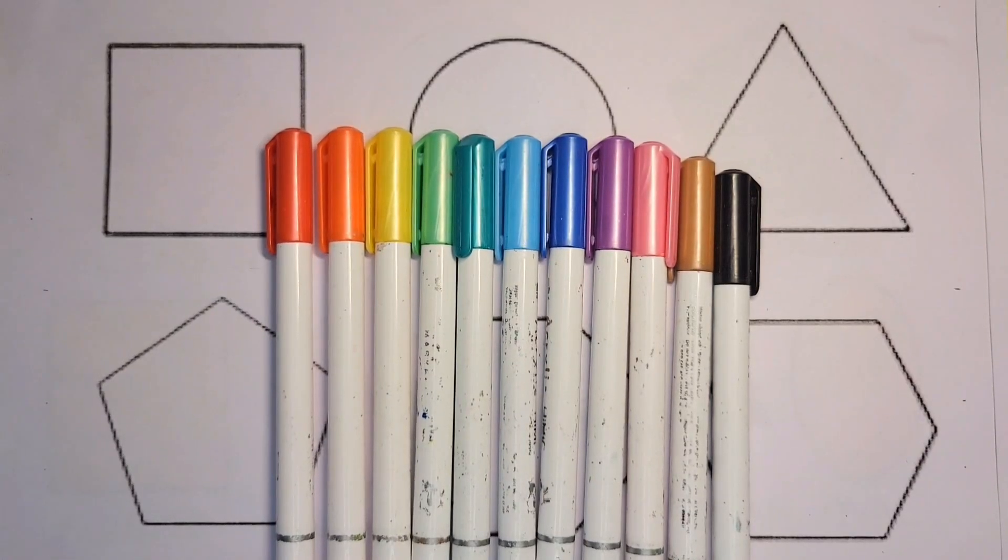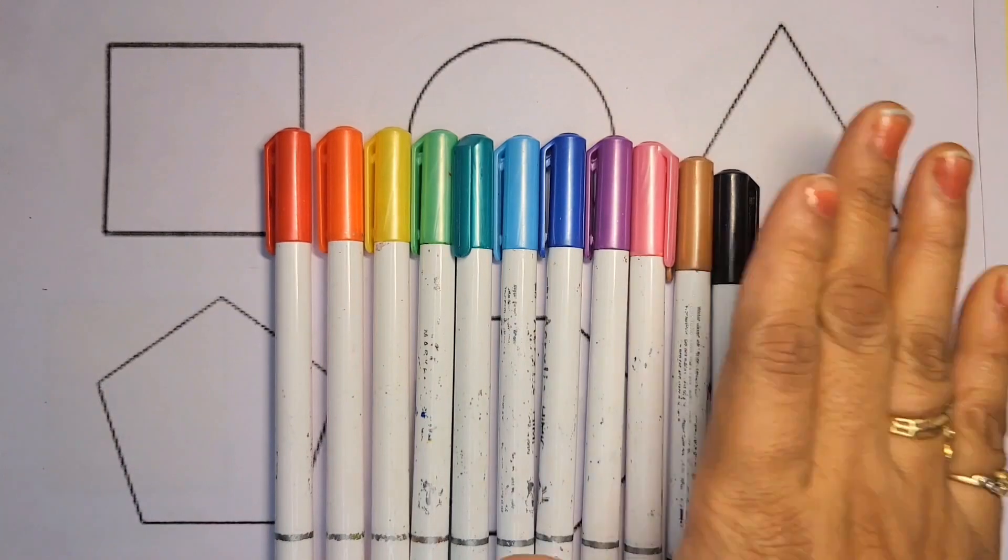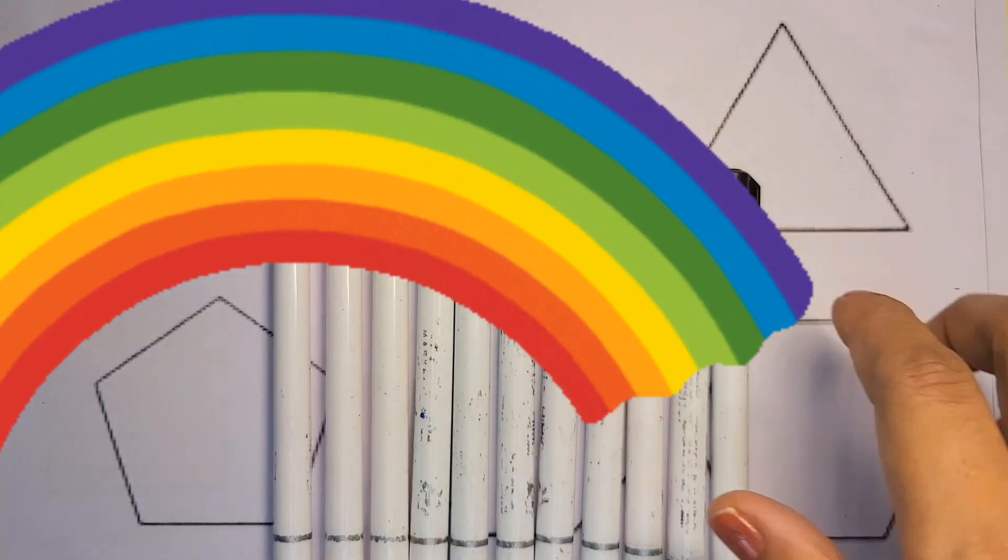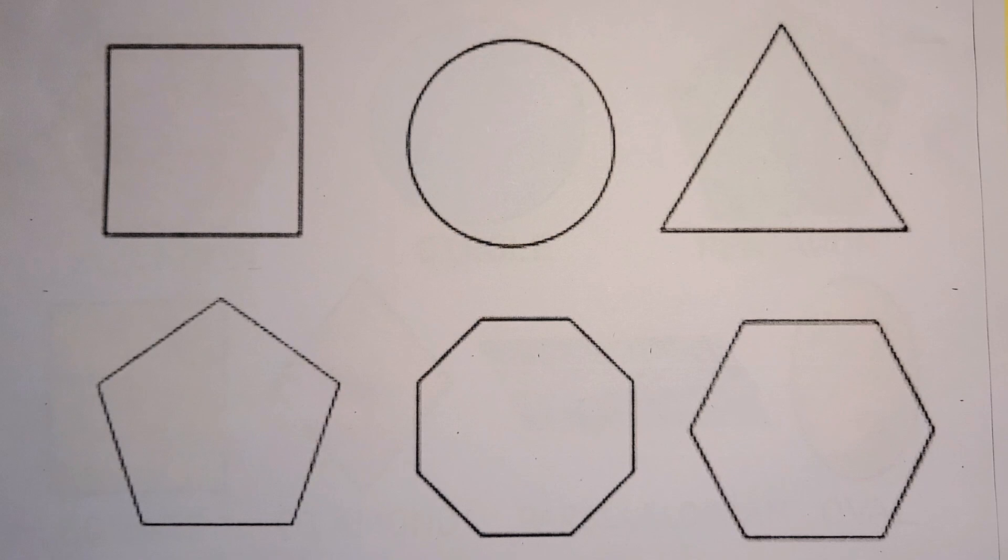Hello guys, welcome to my channel Chico Kids. Today we learn colors in rainbow theme and shapes. Square, circle, triangle, pentagon, octagon, hexagon.